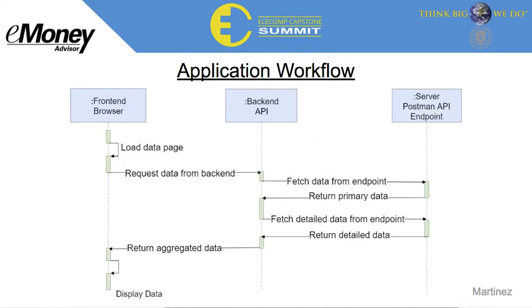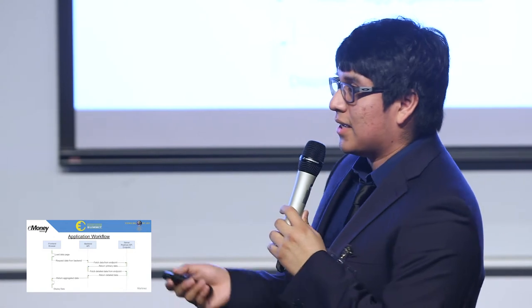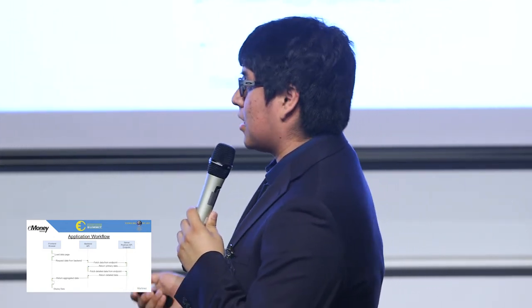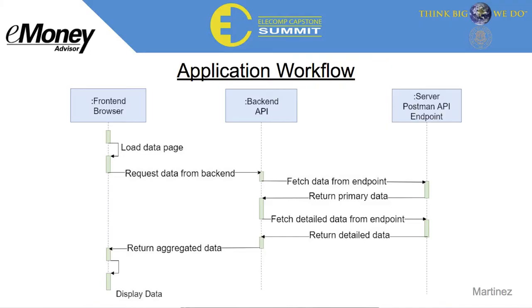Our application workflow gives the user two options: one is to fetch data, which prints out a table of our data, and the other is a Gantt chart option. When the user clicks either option, the application sends a request to the backend. The backend then requests information from our API development environment, known as Postman, and retrieves primary data with general information about the different automated builds.